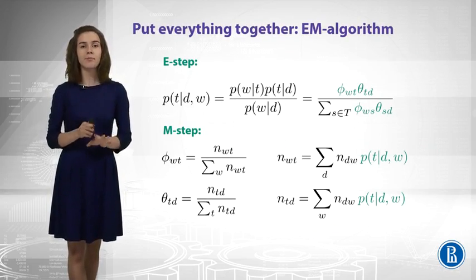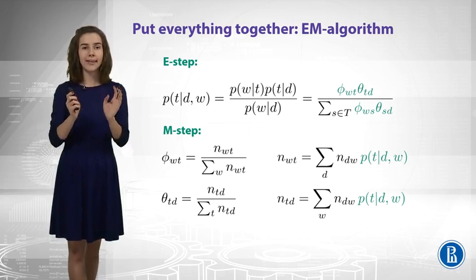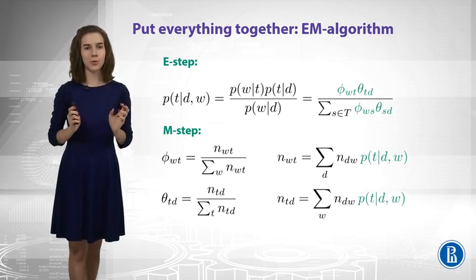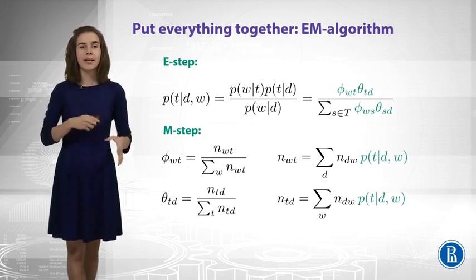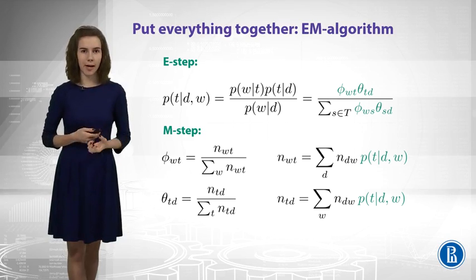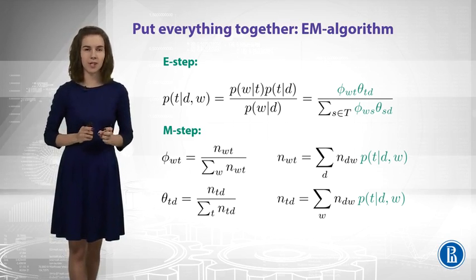Now, it's time to put everything together. We have EM algorithm, which has two steps, E-step and M-step. E-step is about estimating the probabilities of hidden variables. And this is what we have just discussed.